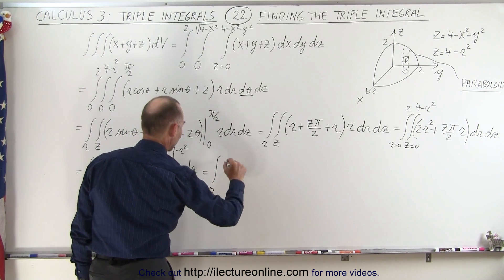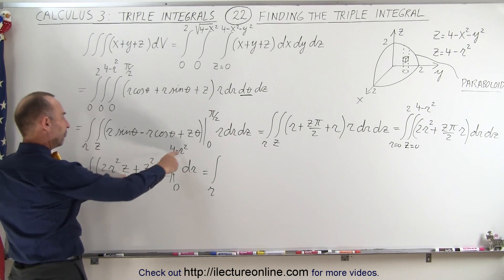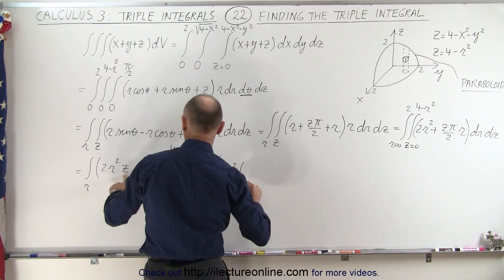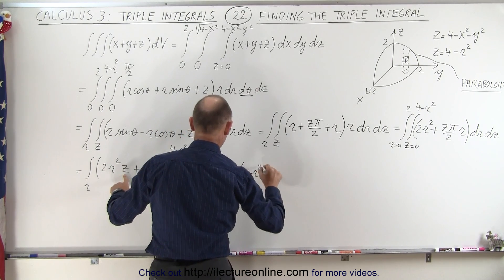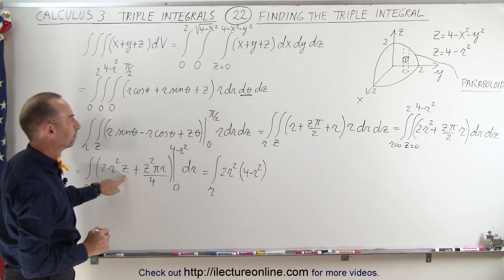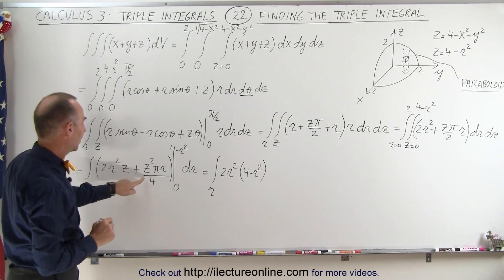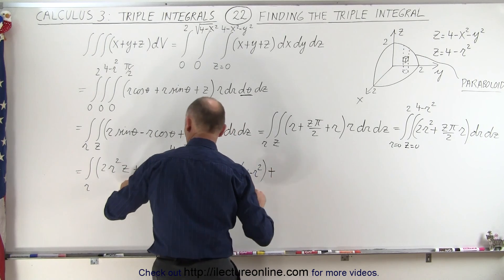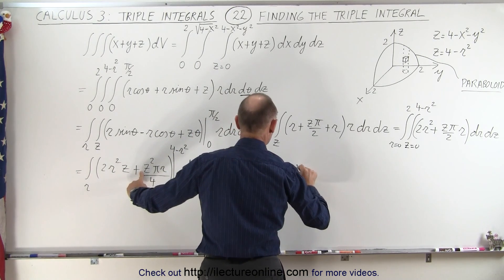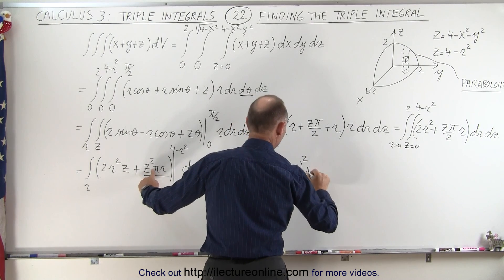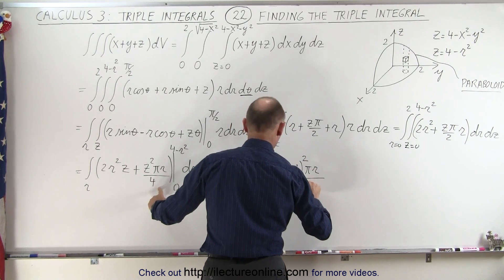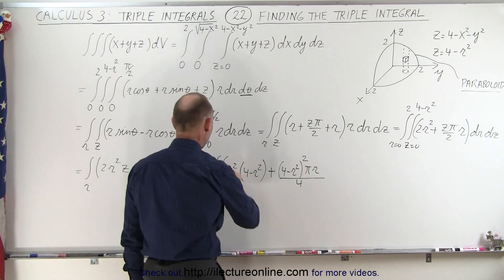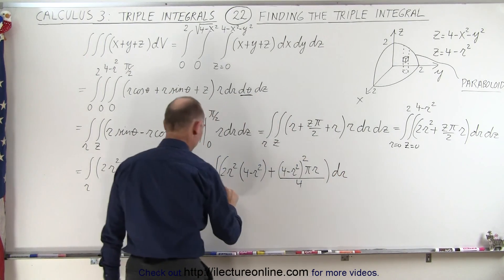Plugging in the lower limit gives nothing. Plugging in the upper limit — substituting 4 minus r squared for z — we get 2r squared times (4 minus r squared) for the first term, plus (4 minus r squared) squared times pi times r divided by 4 for the second term. The limit for r is from 0 to 2.